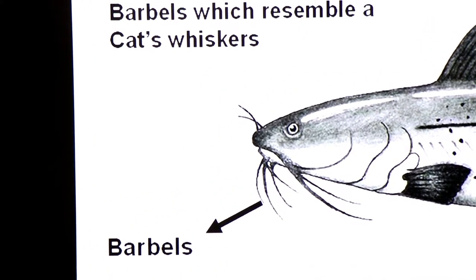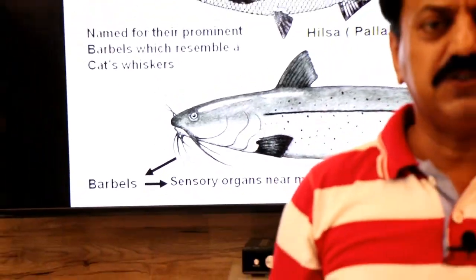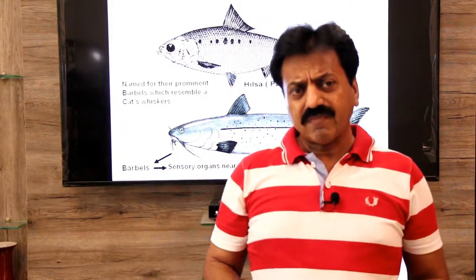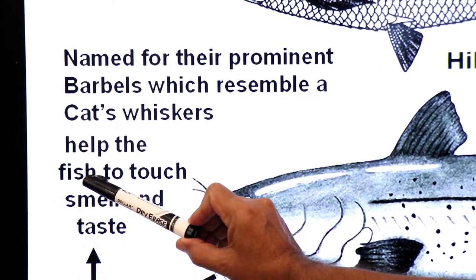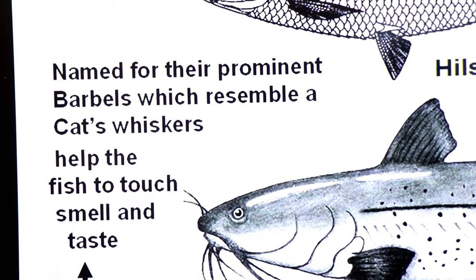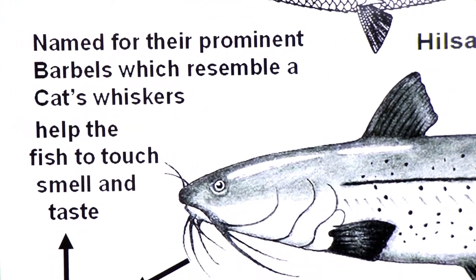What is the function of barbels? Sensory organs near mouth. Dear students, these are the catfishes that are caught in water. These are the sensory organs near mouth. What is the function of barbels? Help the fish to touch, smell and taste food in order to locate food. So these barbels help in searching or locating food.